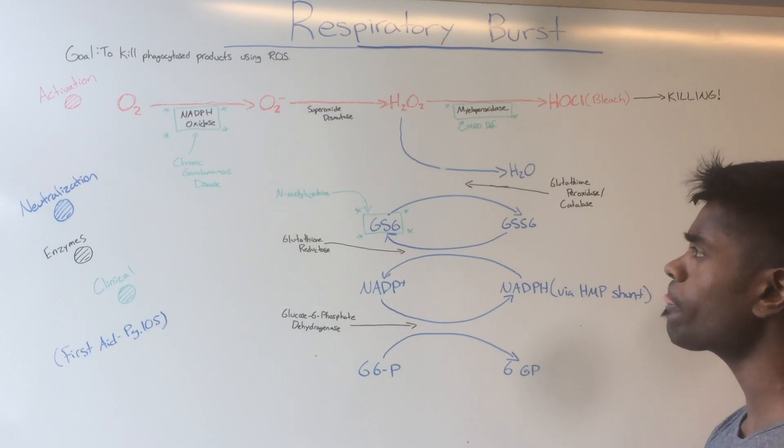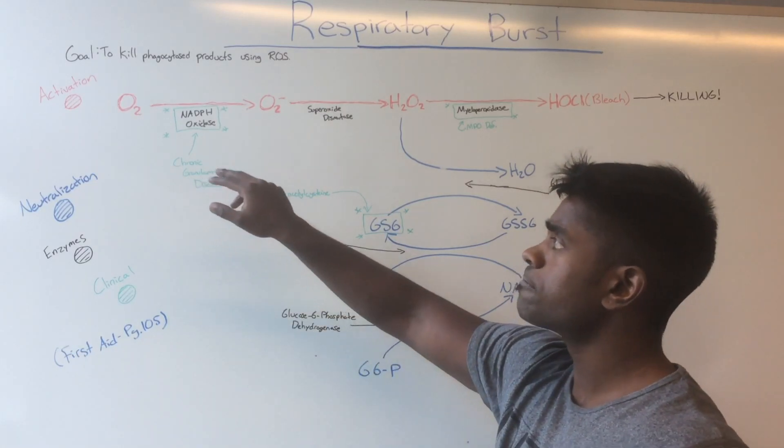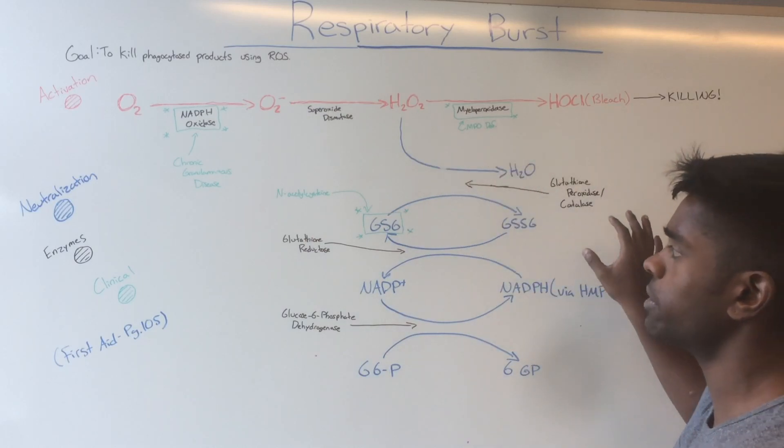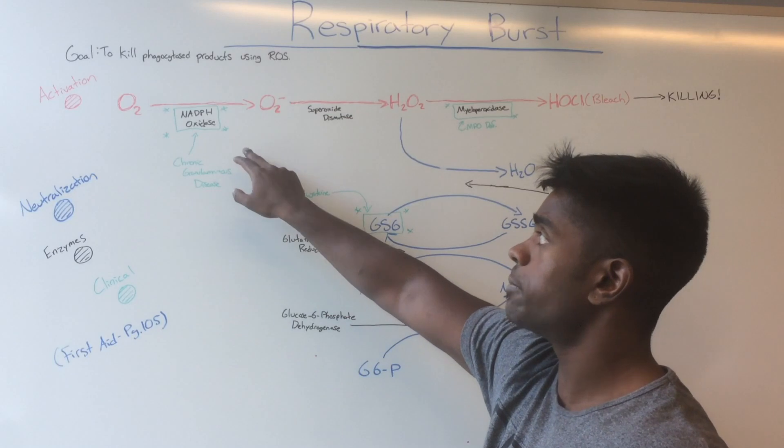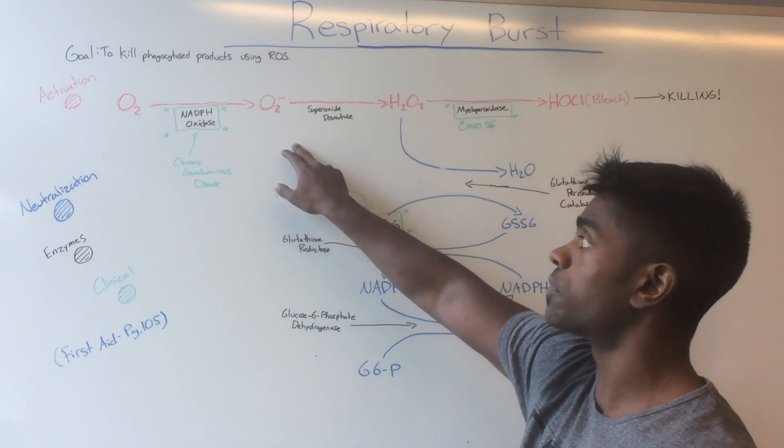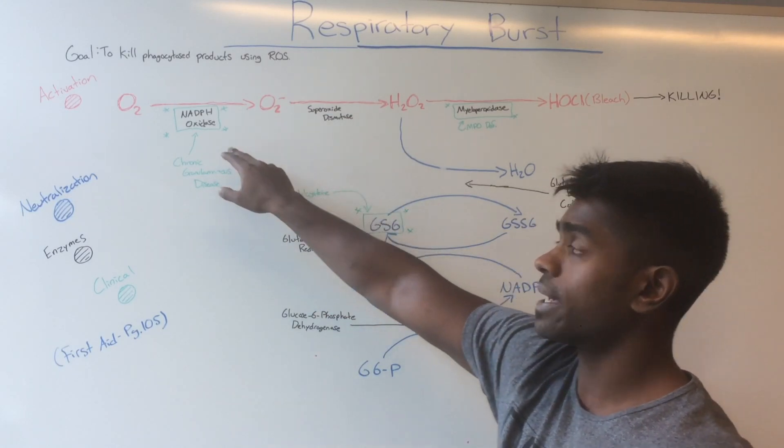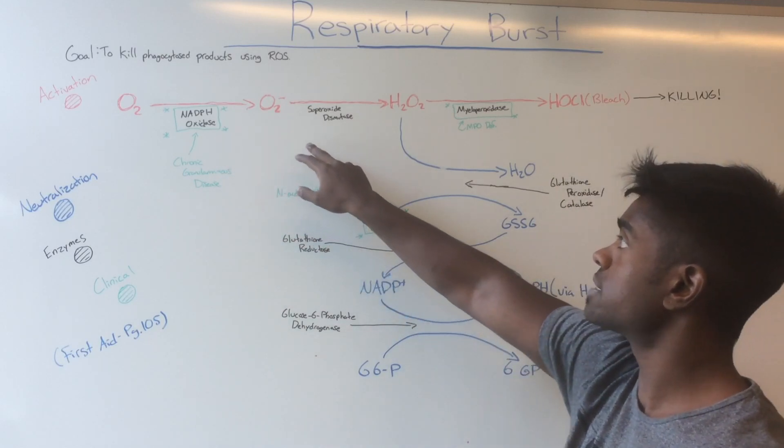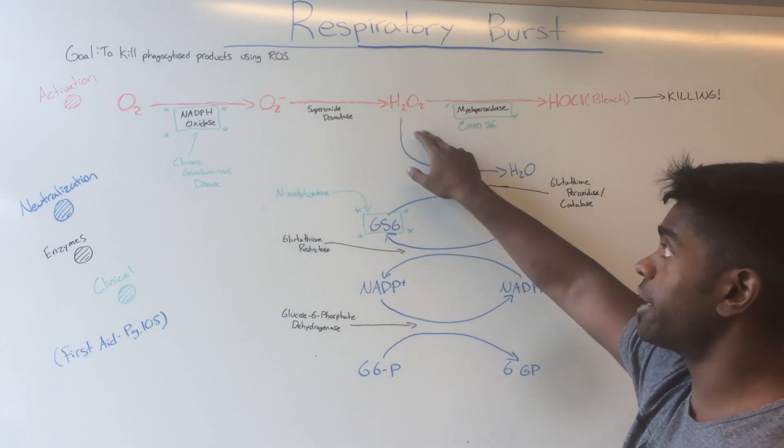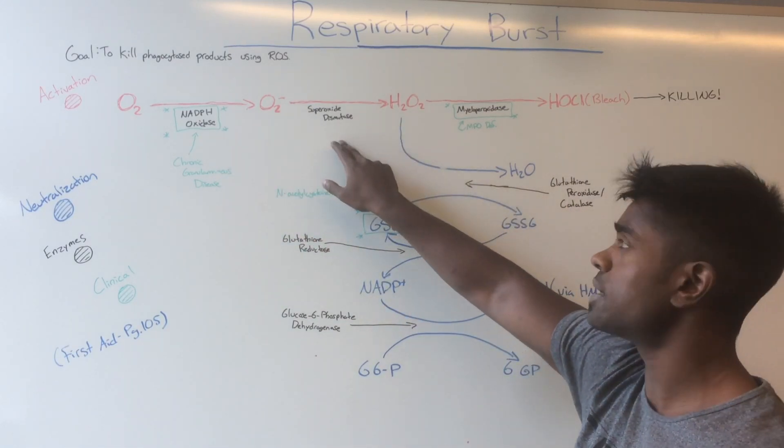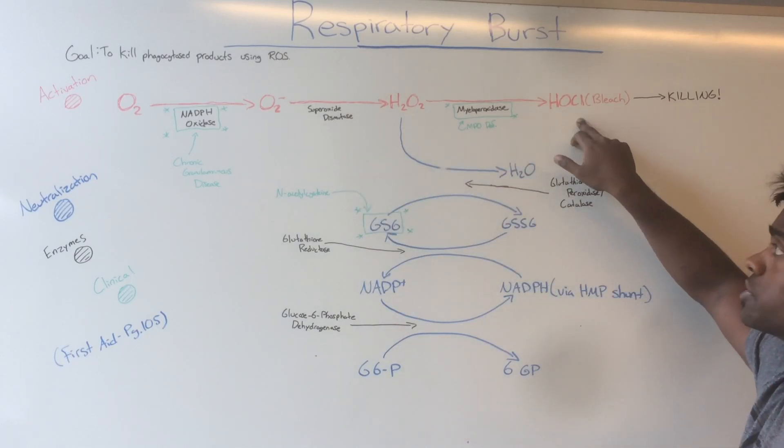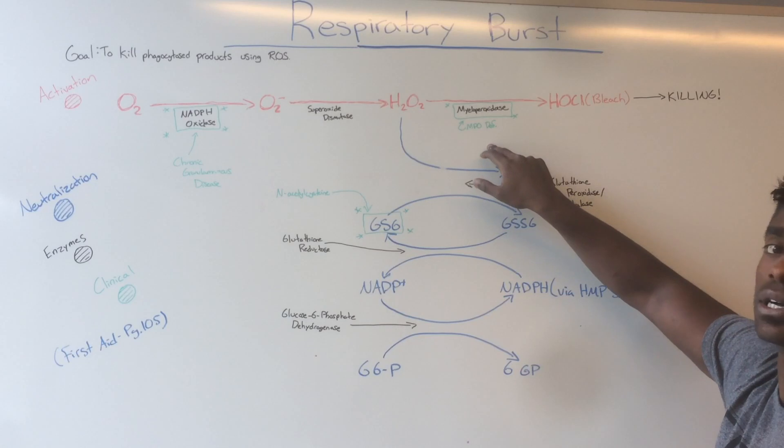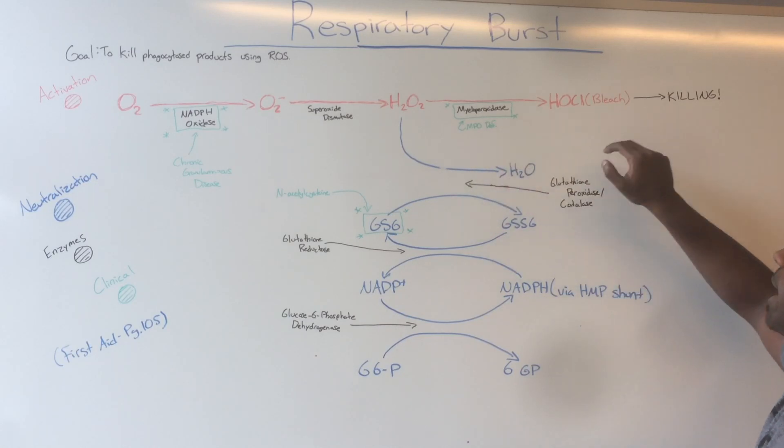Activation of the respiratory burst pathway begins with molecular oxygen using NADPH oxidase to form superoxide. Superoxide is converted into hydrogen peroxide using superoxide dismutase. Hydrogen peroxide to HOCl, or bleach, is converted via myeloperoxidase, and then this HOCl bleach can kill those phagocytosed products.